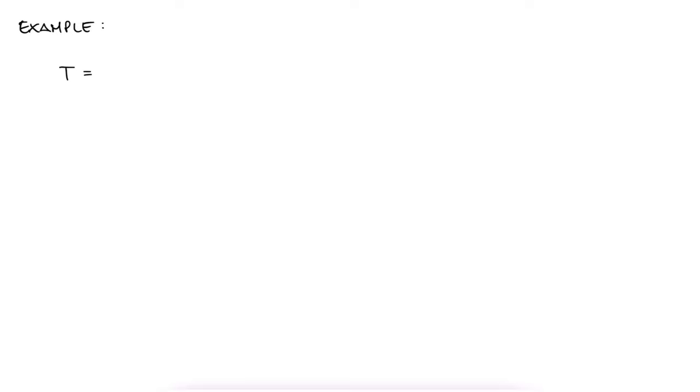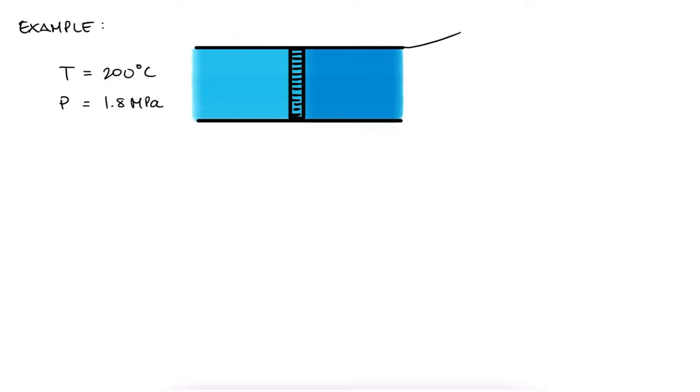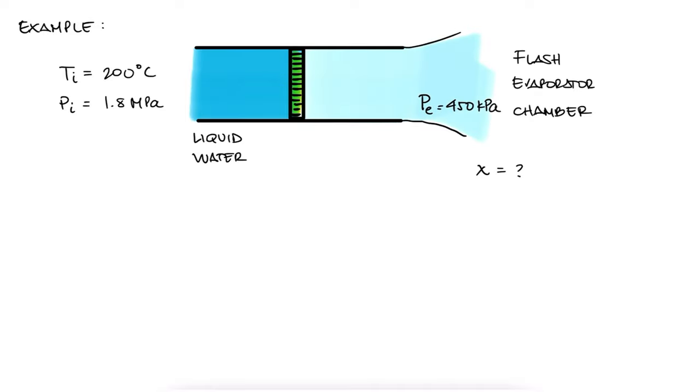At 200 degrees Celsius and 1.8 megapascals, liquid water is throttled into a flash evaporator chamber at 450 kilopascals. What is the quality of the liquid vapor mixture coming into the evaporator chamber? As usual, pause here and try to solve this problem yourself.